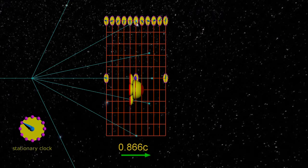Our clock says 10, and the moving clock reads 5. This slowing of time is called time dilation.